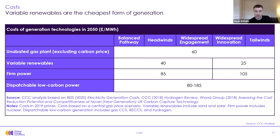Firm power — in particular nuclear — we see as being more expensive than renewables even out to 2050. Dispatchable low carbon power, with gas CCS at the low end of that range, is competitive with firm power, but BECCS is slightly more expensive and towards the higher end of that range.